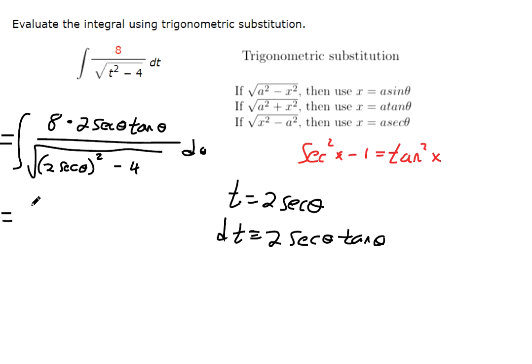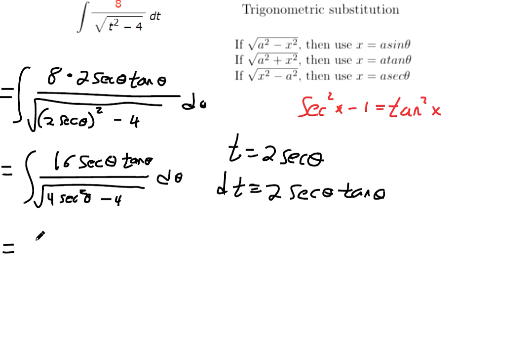So now we can simplify the bottom. It's going to make life a little bit easier down there. 8 times 2 is going to make 16 up top. And then on the bottom, that's 4 secant squared theta. So we can factor out a 4.